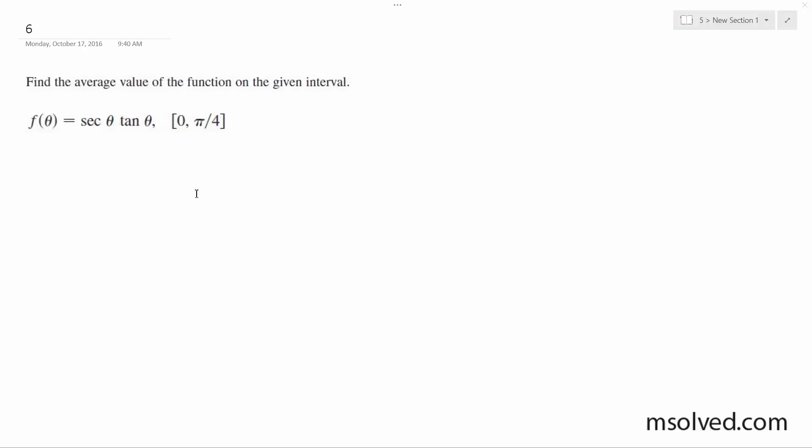We're going to find the average value of this function. The function average is going to be equal to 1 over b minus a, from a to b, and we get f of theta d theta.